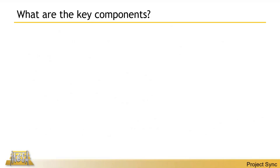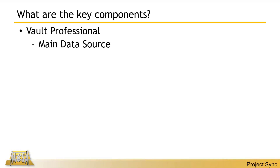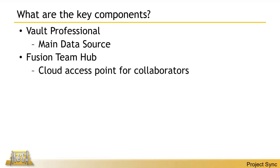Let's make sure everybody understands the key components. Vault Professional is your main data source — the source of truth, the place we rely on as being correct. Fusion Team Hub is your cloud access point for collaborators. Files get pushed out to the Fusion Team site, and you invite people into that project via their email address, since Autodesk treats email as the unique identifier. You control allowing them in or out, and when the project is closed you simply remove their access.